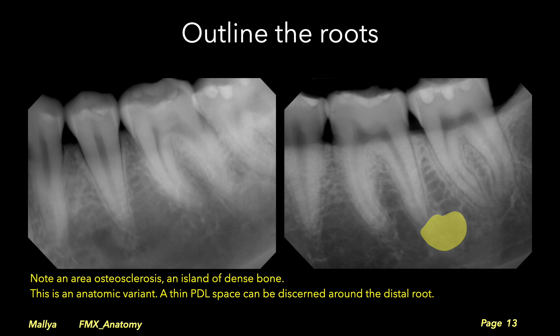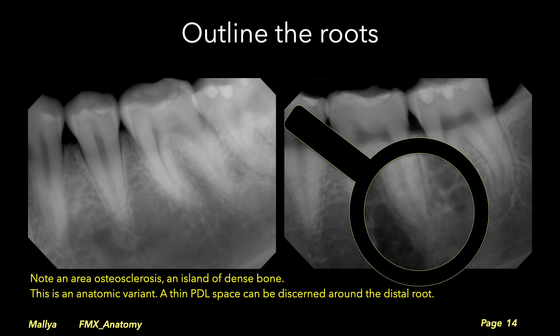Note a diffuse radiopacity adjacent to the distal root of the mandibular first molar. This is an area of osteosclerosis, which is an anatomic variant. You should visualize this area in more detail to ensure that an intact laminar dura can be traced around the root apex.